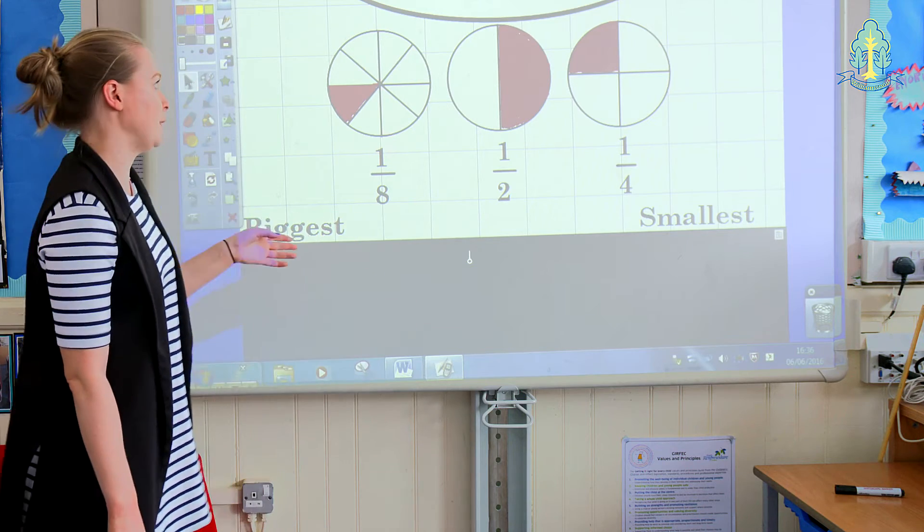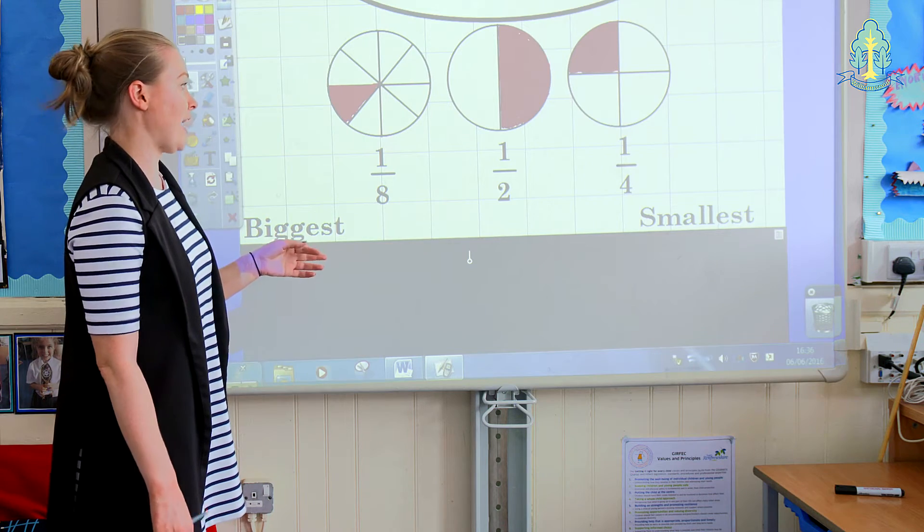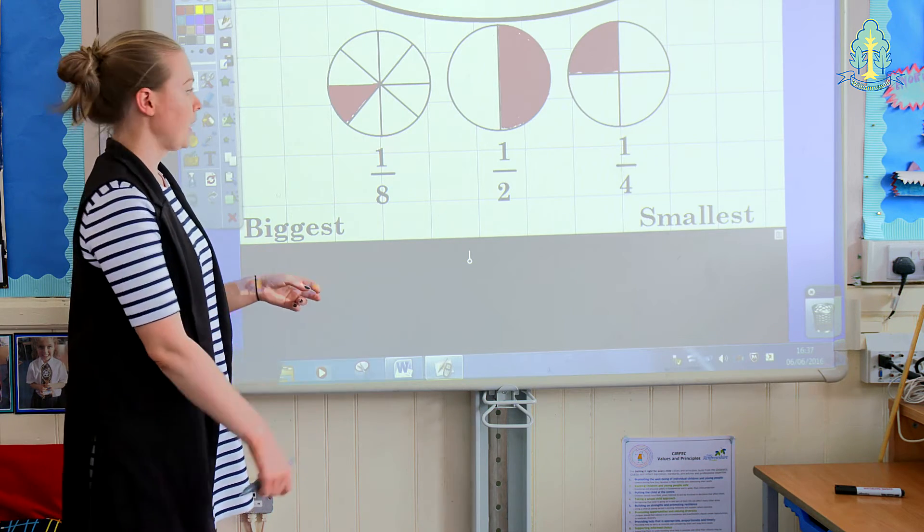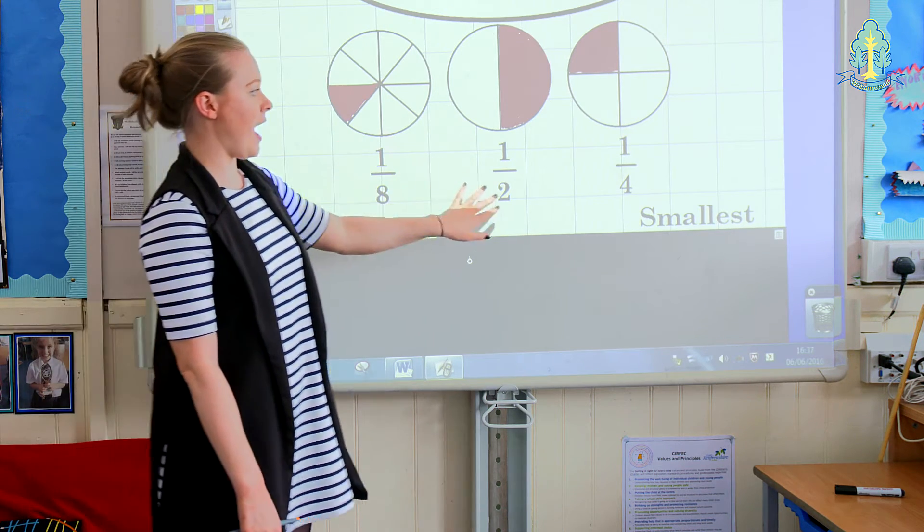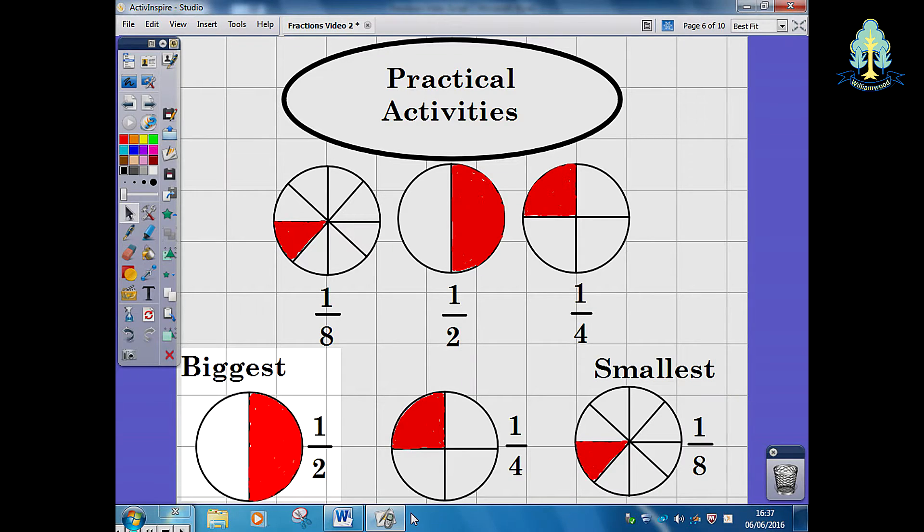This is an example of an activity that children might be given where they've been asked to organise fractions in order of size. They've been given an eighth, a half and a quarter. The children would organise these from the biggest fraction, which is a half, then a quarter and the smallest being an eighth.